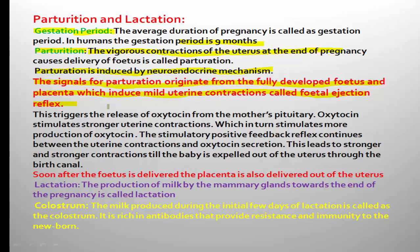When the fetal ejection reflex starts, this phenomenon triggers the release of oxytocin from the mother's pituitary. At the end of the pregnancy, at the end of the gestation period, the fetal ejection reflex starts, and oxytocin production in the mother's pituitary increases, which is responsible for vigorous contraction of the uterine muscles.